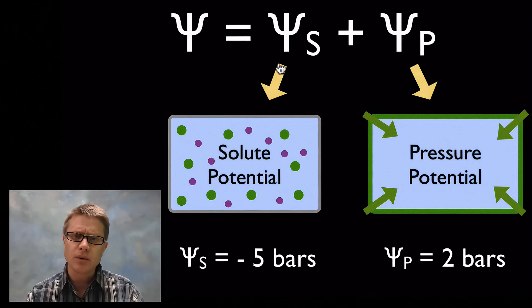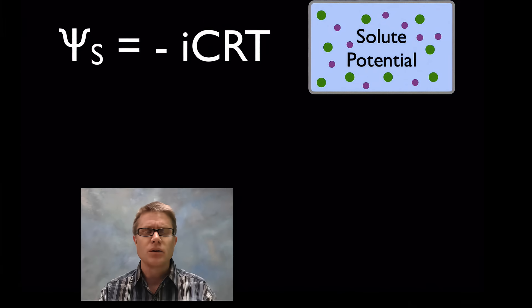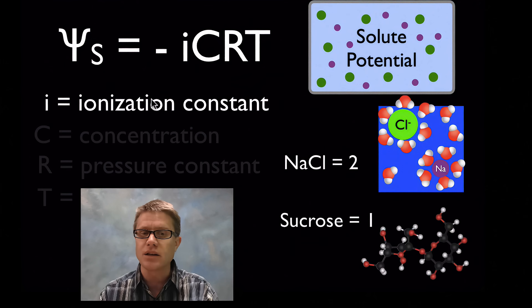Sometimes you'll be asked to do a little bit more detail here on the solute potential. There's an equation for that which in my class I would not want you to memorize, but let's throw that up here right now. So solute potential is equal to negative I, C, R, T. So we've got to go through each of those parts, the I, the C, the R and the T.